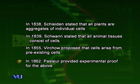In this way, the cell theory took its current form: all living organisms consist of one or more cells; cells are the basic unit of life; and all cells arise from pre-existing cells. This covers the important features of cell theory.